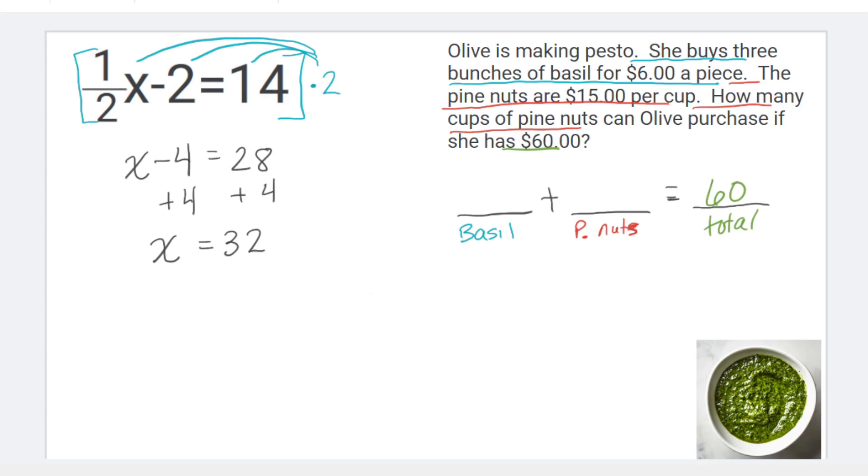So if I'm thinking about the basil, we have three bunches of basils for $6 a piece. So to get a total amount of money for that, you would take that three bunches and times it by the $6, and that will get you an amount of money for that total.